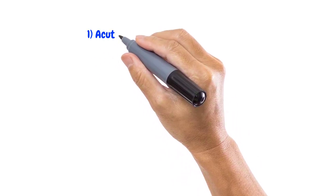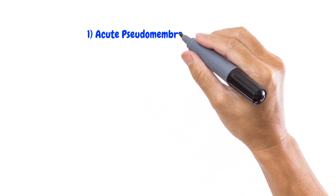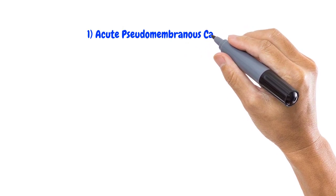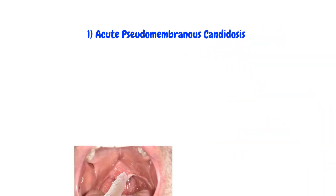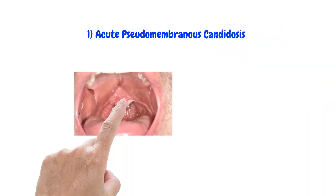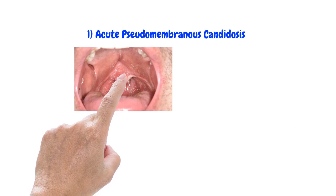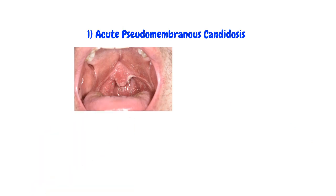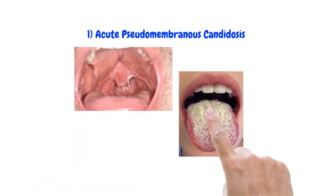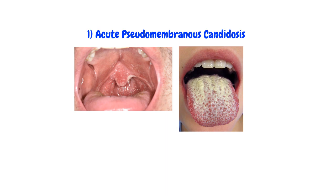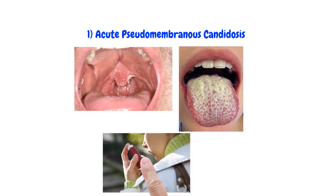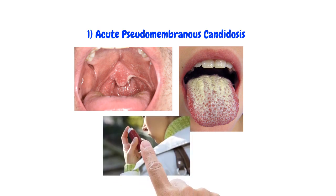Let's start with pseudomembranous candidosis, i.e. oral thrush. This is where you will see soft, creamy, yellow patches that can be wiped off to reveal an underlying erythematous mucosa. It is frequently found on the soft palate with steroid inhaler use, but can be seen at any oral site.